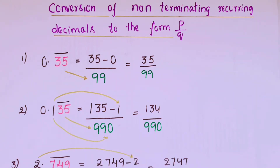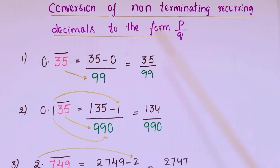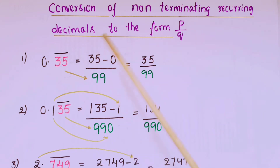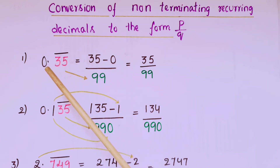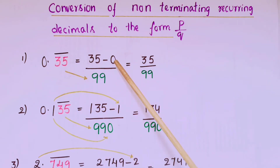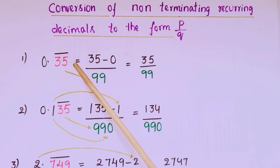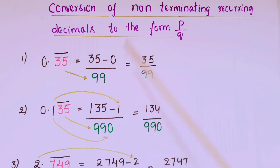Hello everyone, today I am going to tell how to convert non-terminating recurring decimals to the form p by q without doing the long process. The first one is 0.35 bar. First write the number 35, then minus the digits which are not below the bar — here only 0, so write 0. Below the bar there are two digits repeating, so write two nines. That is equal to 35 by 99.